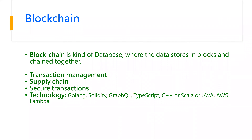Blockchain is another thing — a kind of database. Technologies used to develop it include Golang, Solidity, GraphQL, TypeScript, and Scala. Blockchain is currently being used for cryptocurrency, but going forward they are planning to use it for transaction management, supply chain, and secure transactions.